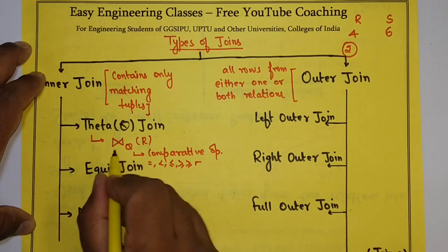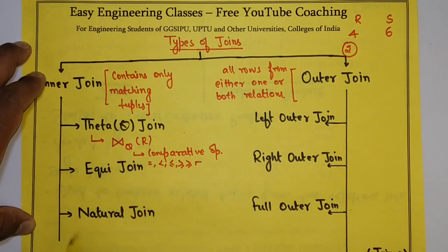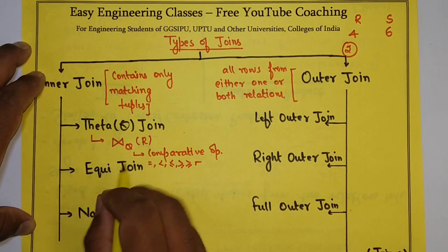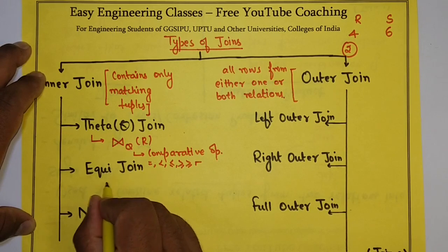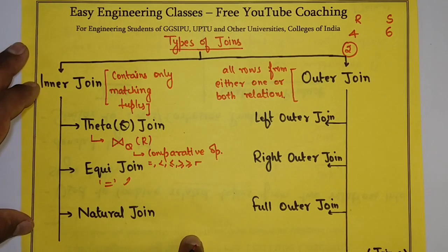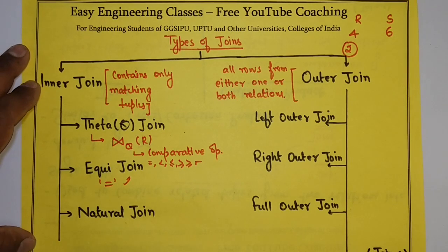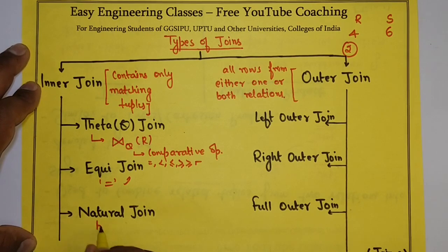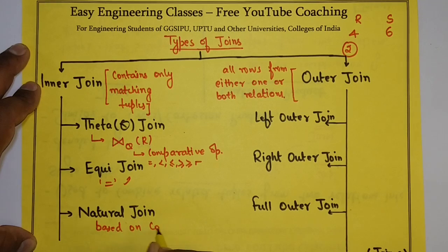If in the comparative operator I am using only equals to, then it is known as equi join. Whereas natural join is based on a common attribute present in both the relations.